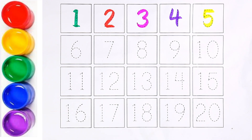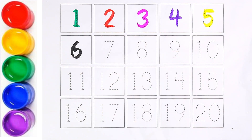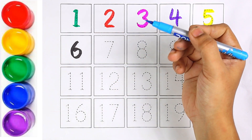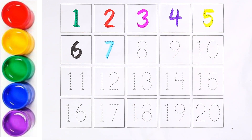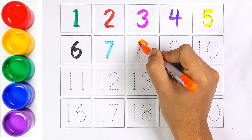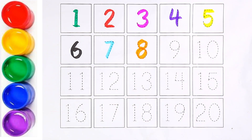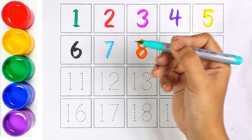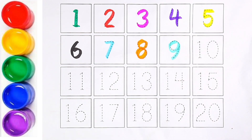And the next number is number six. I am using black color for number six. Sky blue color. Number seven. Orange color. Number eight. And the next color is light blue color. Number nine.